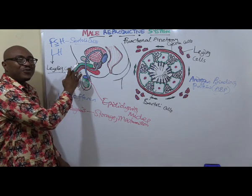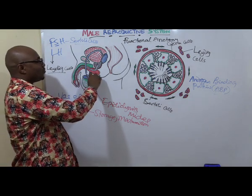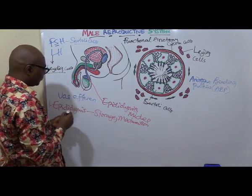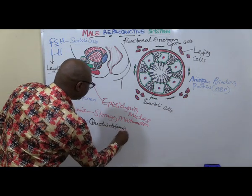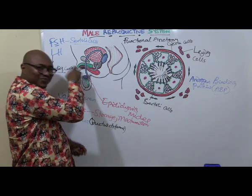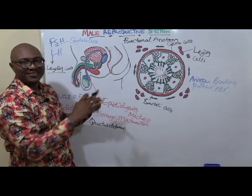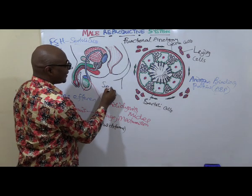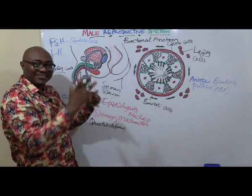From the epididymis, tubules come together to form the vas deferens, also known as the ductus deferens. Its function is to conduct the sperm from the epididymis along the tract to meet other structures that add volume to the sperm, converting it into semen. It is important to know there is a difference between semen and sperm — as it travels, fluid and substances are added to it.